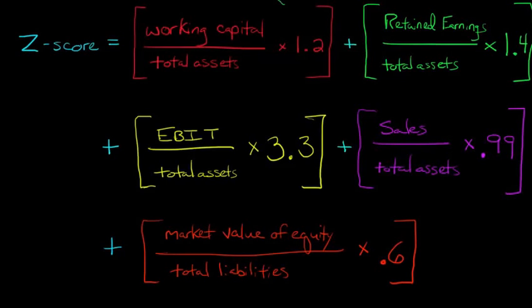So you just take the sum of these five components that are each surrounded by brackets. And then the second part is just retained earnings divided by total assets, and multiply that by 1.4. And then you add earnings before interest and taxes. That's what EBIT is. And you scale that by total assets, and then you multiply that amount by 3.3.